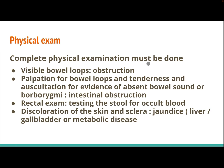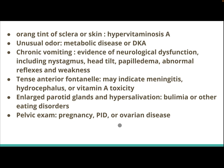A complete physical examination must be done. Visible bowel loops may indicate obstruction. Palpation for bowel loops and tenderness, and auscultation for evidence of absent bowel sounds or borborygmi may indicate intestinal obstruction. Rectal exam and testing the stool for occult blood should be performed. Discoloration of the skin and sclera — jaundice — indicates liver, gallbladder, or metabolic disease.